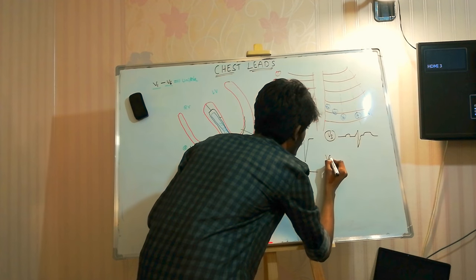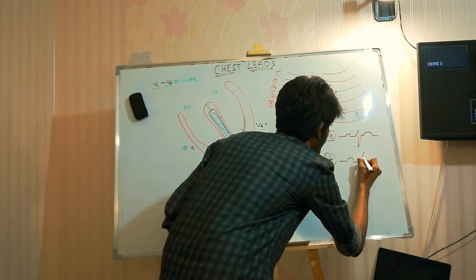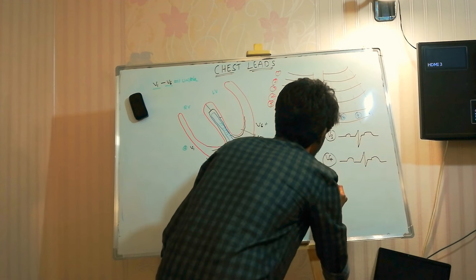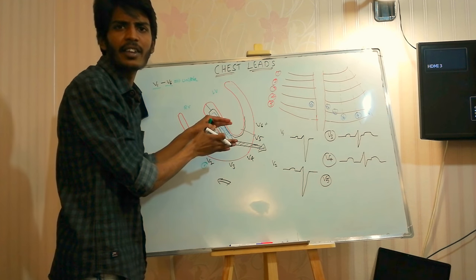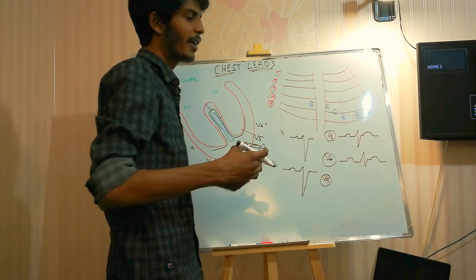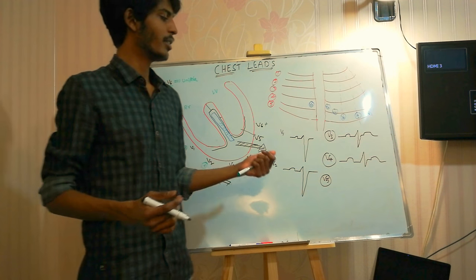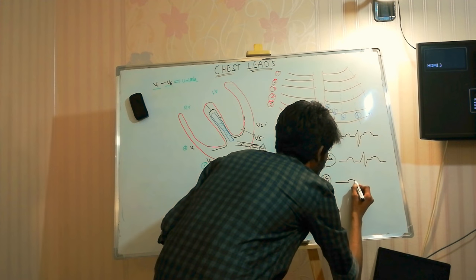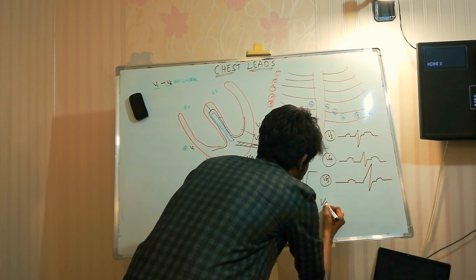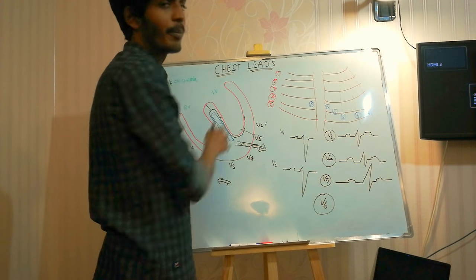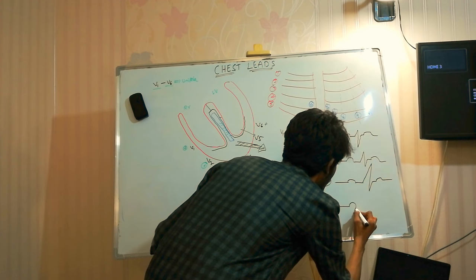V4 shows an even bigger R wave as the depolarization direction comes more toward it. V5 is almost totally in the direction of major ventricular depolarization, so it shows a large R wave. In some cases, a Q wave may not be recorded in V5 and V6. V6 is also in the same direction of major ventricular depolarization, so it gives a big positive R wave.